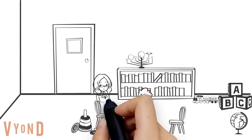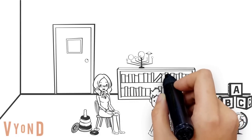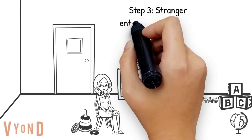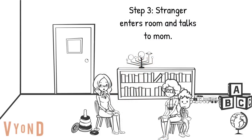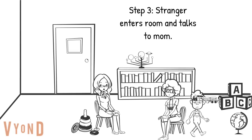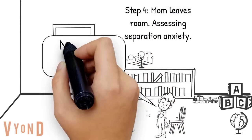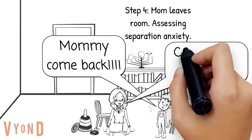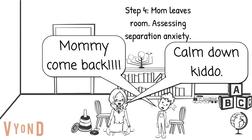In step three, a stranger comes in, sits down, and starts talking to the parent. Researchers observe how the child reacts — does the child not mind the stranger, get scared and move closer to the mother? In step four, the mother leaves the room and leaves the child alone with the stranger. Researchers observe whether the child gets stressed and shows separation anxiety when the mother leaves.